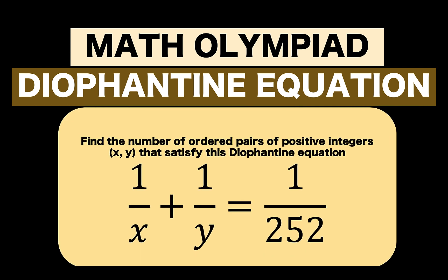Hi guys, here's our math problem for today. Find the number of ordered pairs of positive integers x, y that satisfy this Diophantine equation: 1 over x plus 1 over y equals 1 over 252. You can pause the video and try this problem first.